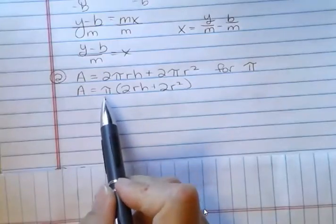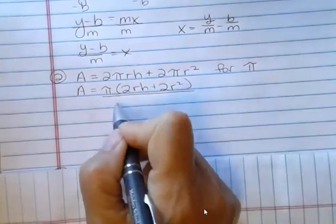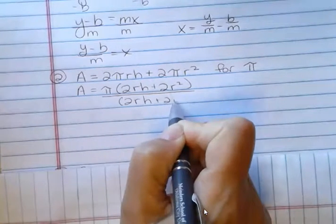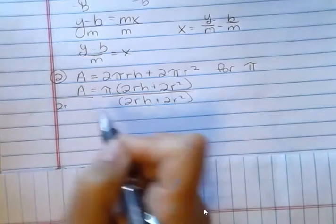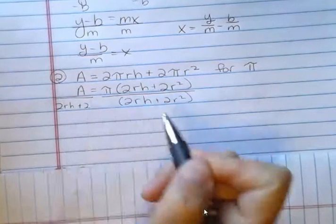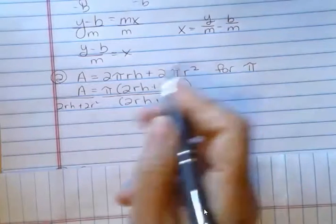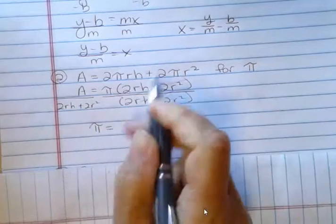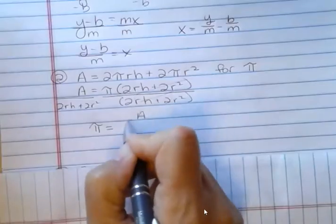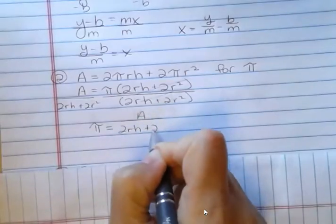Now pi is by itself. So we can divide both sides by this quantity on both sides, 2rh plus 2r squared. And those cancel on there. So I get pi. I can put pi on the left or the right. I'm going to put it on the left. Pi equals A over 2rh plus 2r squared.